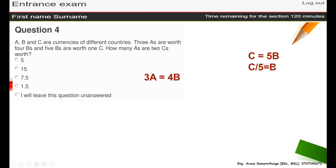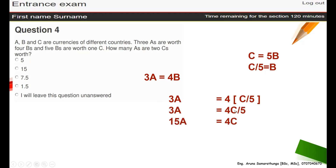So I'm going to substitute B here. Five B's equal one C, so B equals C divided by five. I put that B value into the equation: three A's equal four B's. Now I have only A and C on both sides. Solving: 15A equals four C. But they ask how many A's are two C's, not one C, so multiply both sides by two: two C equals 7.5 A's.